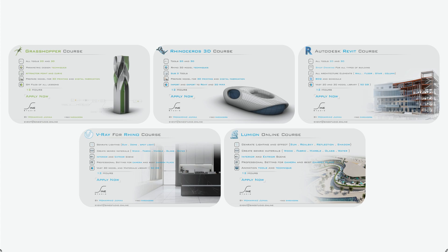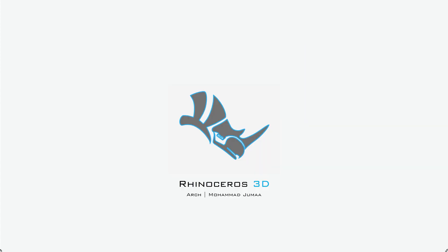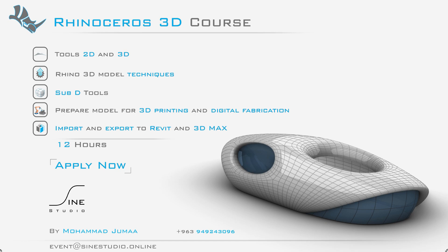We also offer other courses like Grasshopper, Rivet, V-Ray for Rhino, and Lumion. We will cover everything related to Rhino. We will start from 2D elements, then convert to 3D elements. We will also cover everything related to 3D modeling techniques, and we will create many complicated objects using sub-D tools.